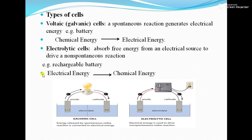Next is types of cells. There are two types of cells. One is the voltaic cell, also called the galvanic cell. The second is the electrolytic cell. In the voltaic cell, chemical energy is converted into electrical energy — that means a chemical reaction produces electricity. A spontaneous reaction generates electrical energy; that is called the voltaic cell. For example, a battery.